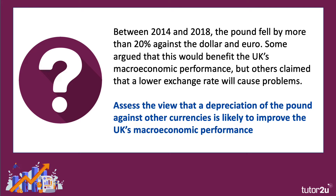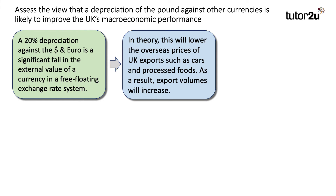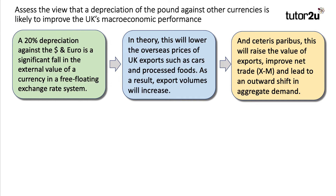The key here is to build chains of reasoning. A 20% depreciation against the euro and the dollar is a significant fall in the external value of a currency in a free-floating currency system. Identify the link between depreciation and floating exchange rates. In theory, this will lower the overseas prices of exports, such as cars and processed foods. As a result, export volumes will increase. And ceteris paribus, this will raise the value of exports, improve net trade, and lead to an outward shift in aggregate demand, because X minus M is part of the formula for aggregate demand.